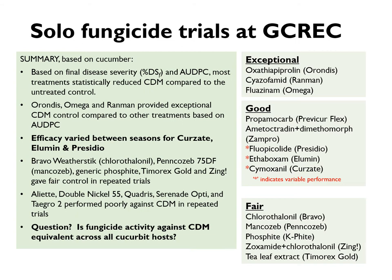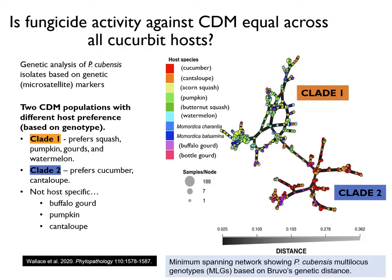The big question is whether fungicide activity against cucurbit downy mildew is equivalent on other cucurbit hosts. Recent research by Lena Quesada's group at North Carolina State University used genetic markers to show that P. cubensis isolates recovered from various cucurbit hosts could be split into two distinct genetic groups, referred to as clades.